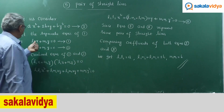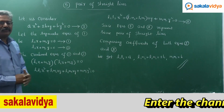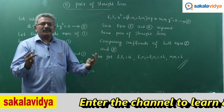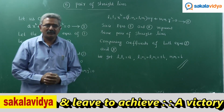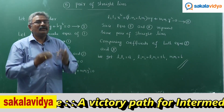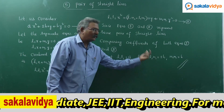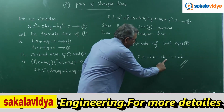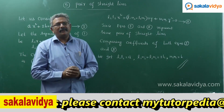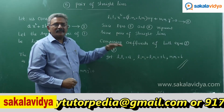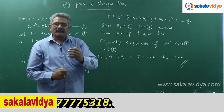So, if L1x + m1y = 0 and L2x + m2y = 0 represent two separate equations, then we have: L1L2 = A, L1m2 + L2m1 = 2H, and m1m2 = B. This is an important result to be kept in mind while doing problems based on the pair of straight lines.